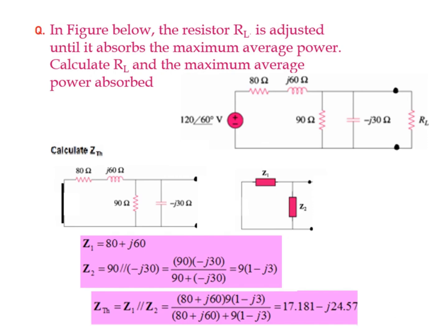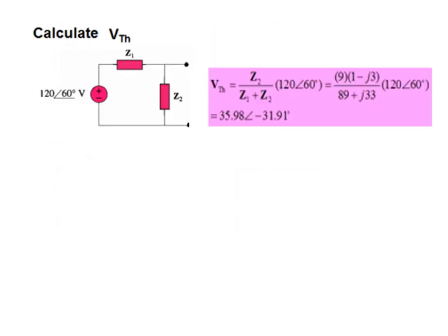Before that, let's calculate the Thevenin voltage. The voltage here is the Thevenin voltage. By voltage divider rule, we find V_Thevenin to be 35.98 volts. Total voltage divided by total impedance multiplied by Z2 gives us V_Thevenin.